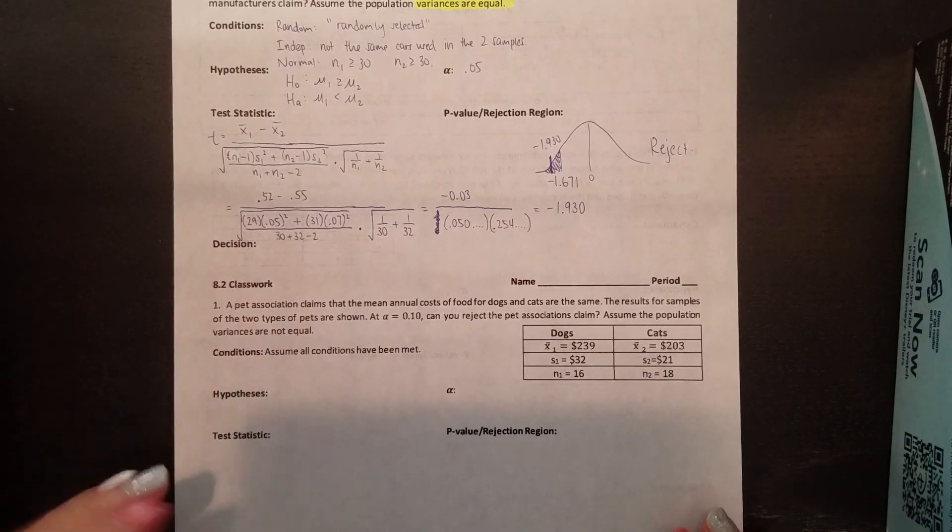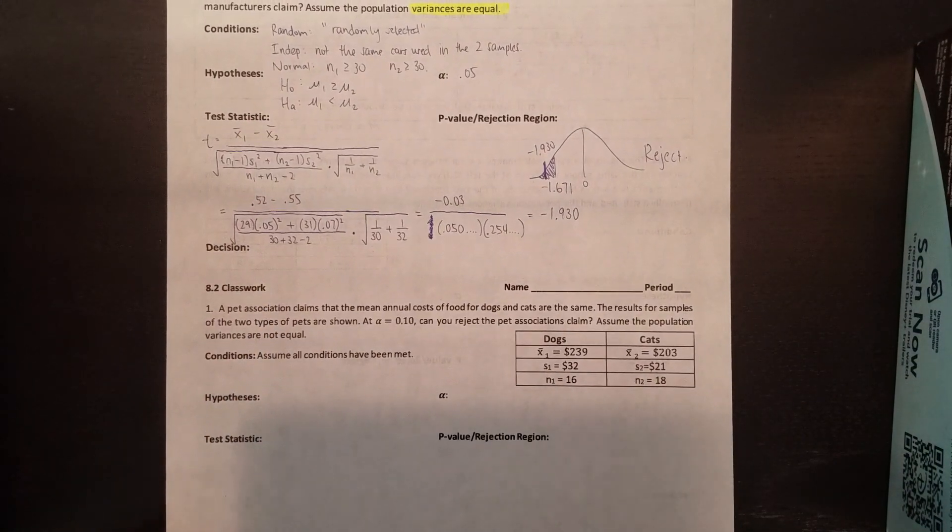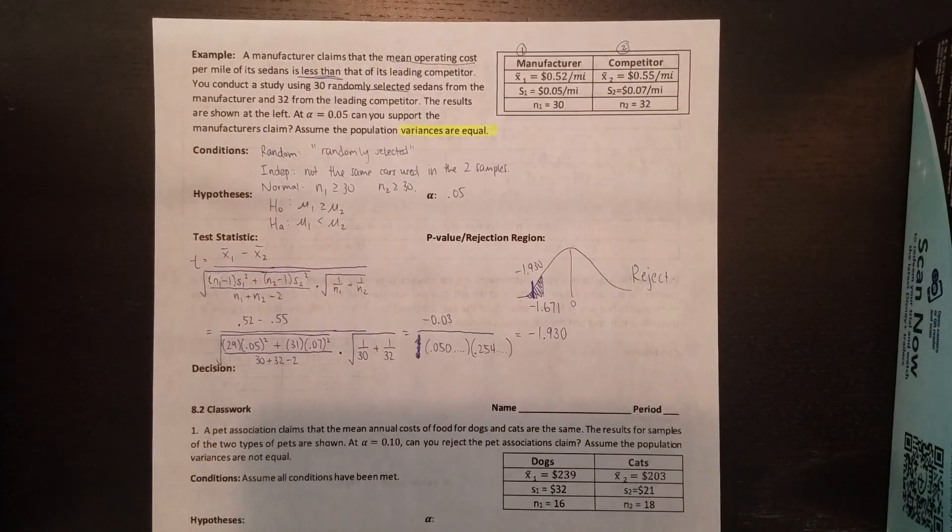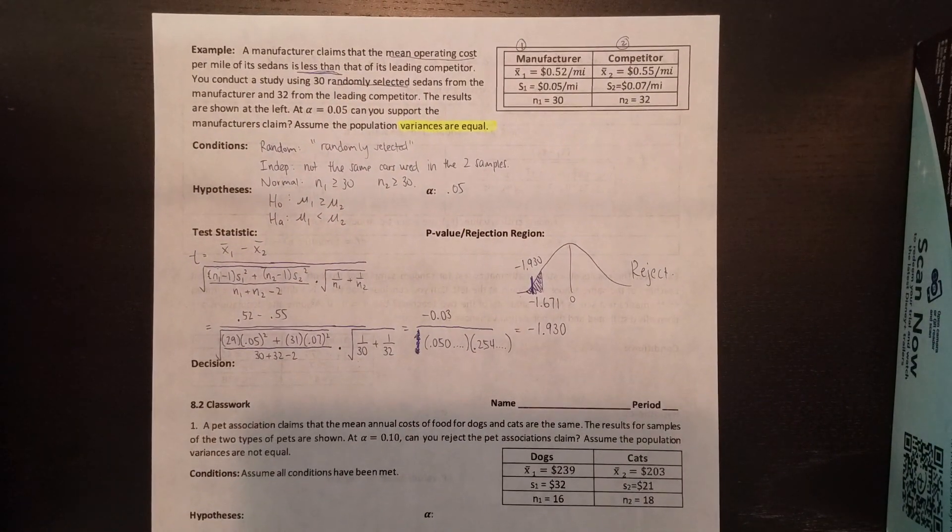Then the decision is exactly the same as before, just reword stuff so that it says your H_A in terms of this problem. That's it for this section. Let me know if you have questions or need help typing things into the calculator. Have fun. Bye!